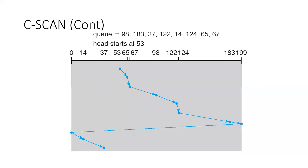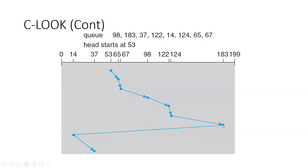In C-SCAN the head goes all the way to the maximum sector, but in C-LOOK it stops at the last requested sector, then comes back not to zero but to the lowest requested sector, and then moves forward again to serve all necessary sectors. That is C-LOOK.